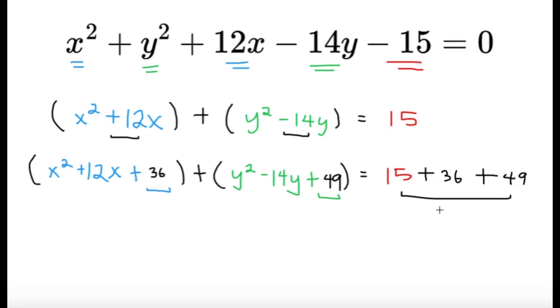Now this part, 15 plus 36 plus 49, that's equal to 100, and for these two parts we can get their respective factoring.